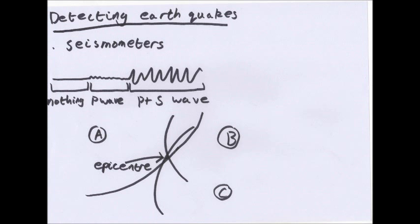You can detect earthquakes using seismometers. With three seismometers positioned around a certain point, you can detect how far the waves are from each one and work out where the epicentre is. The seismometer trace shows: first nothing, then P waves cause a little interference, then the larger S waves arrive causing a lot of movement. You can calculate the time difference between the arrival of the first P wave and the first S wave to work out how far away the earthquake was, using speed and distance.